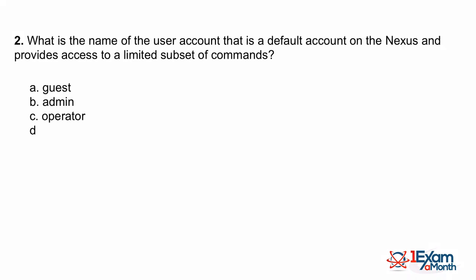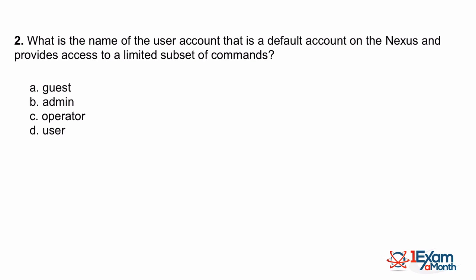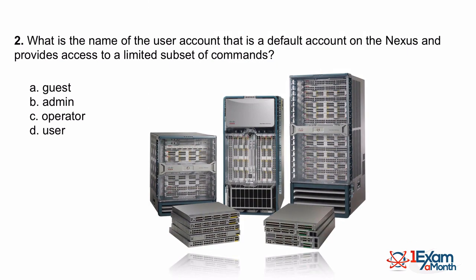Question two comes from the second category on the 640-911 exam: configure, verify, and troubleshoot a switch with VLANs and inter-switch communications. When we talk about switches on this exam, we're not just talking about traditional Cisco Catalyst switches — we may also be talking about Cisco's Nexus series of switches, which are targeted for the data center. Here we see the Nexus 2000, 5000, and 7000 series. This question asks about a default account on a Nexus switch. You might want to pause and think about the answer.